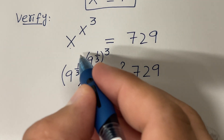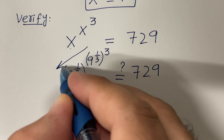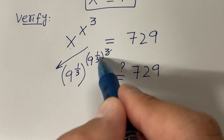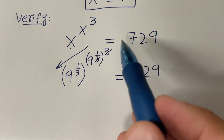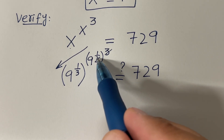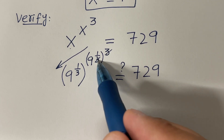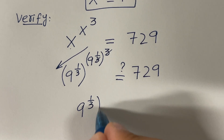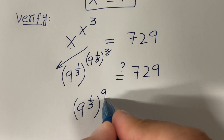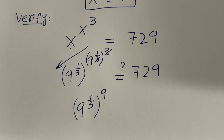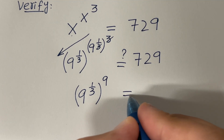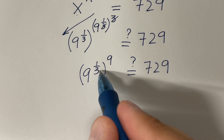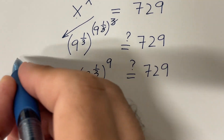For power towers you have to move downwards, so simplify the top tower first. The law of indices says multiply the exponents: 3 times 1 over 3 — the 3s cancel each other — so the exponent inside the parenthesis becomes 1, leaving 9 raised to the power 9. Now again using the law of indices: multiply these exponents — 3 times 3 are 9.